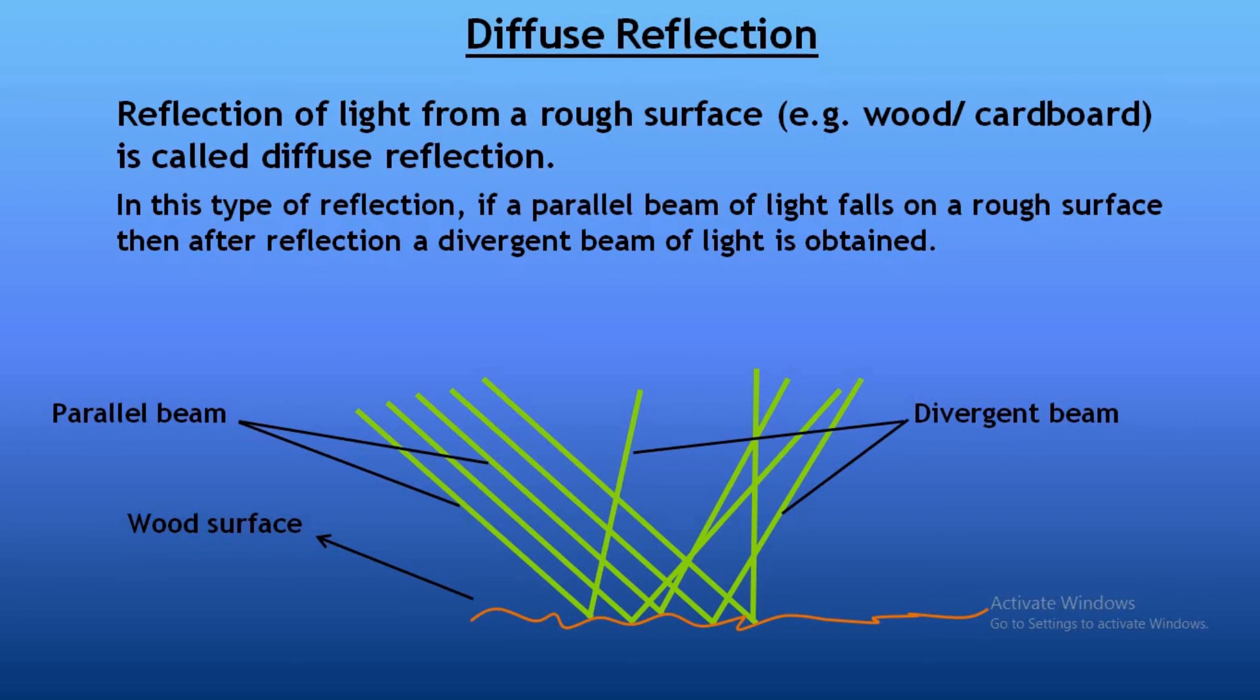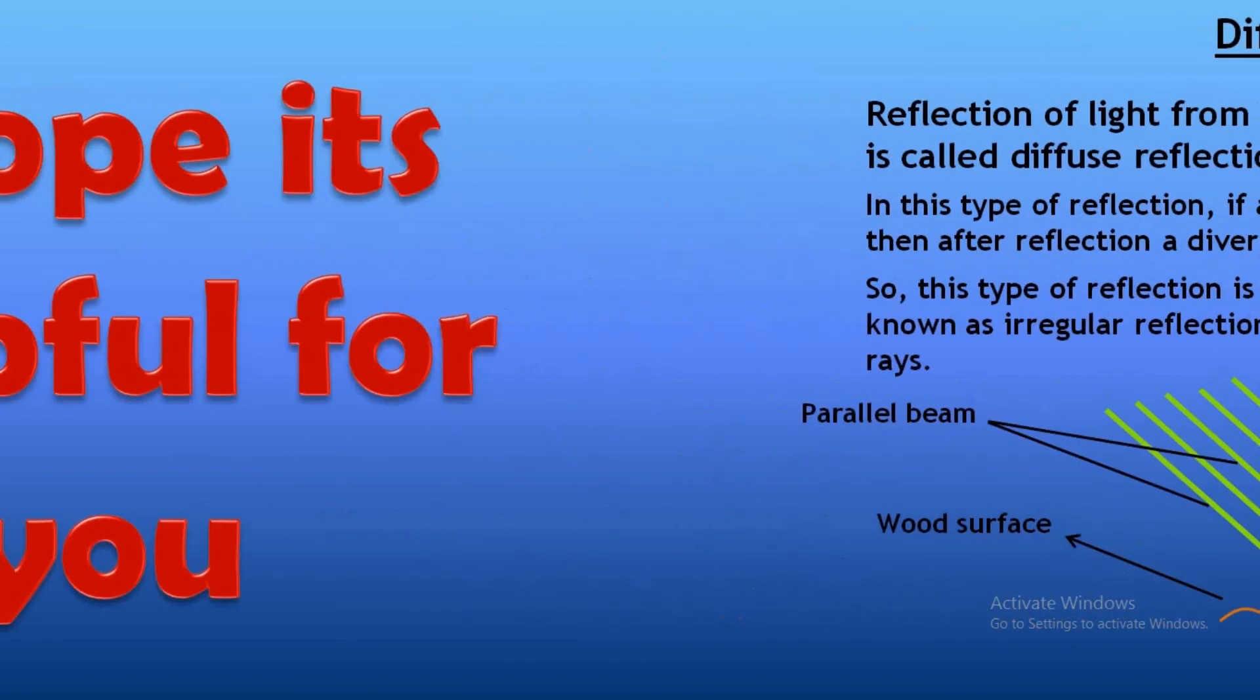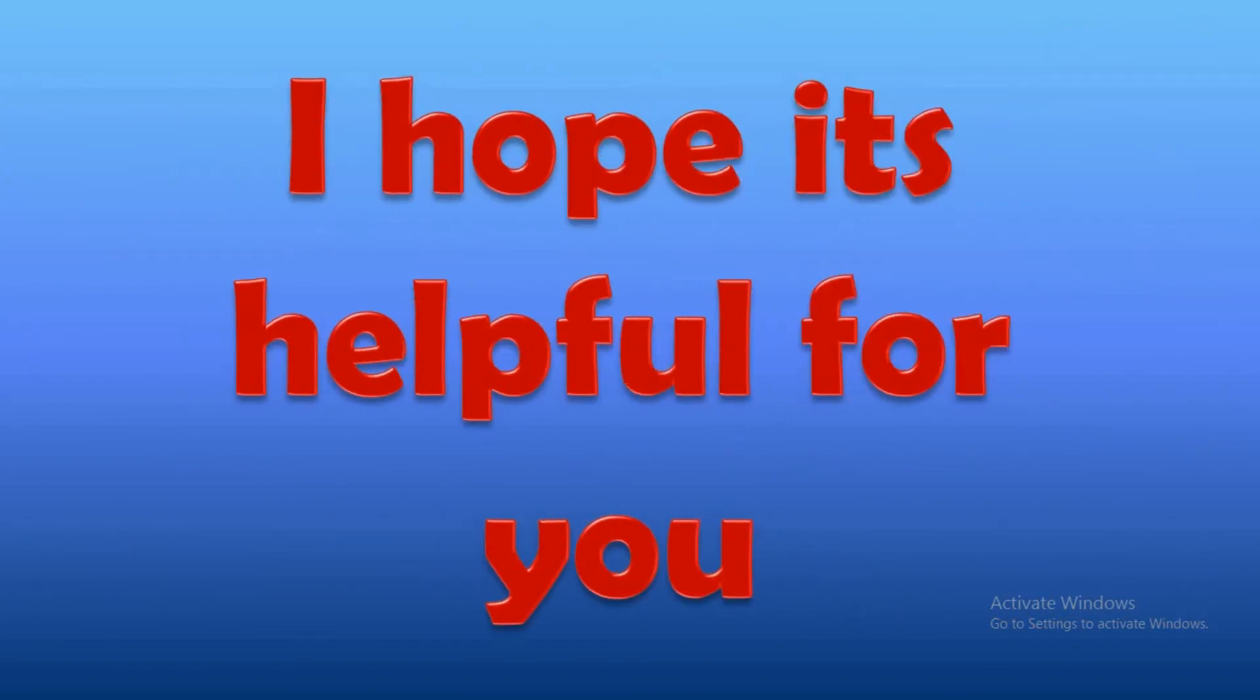So this type of reflection is called diffuse reflection, and sometimes it is also known as irregular reflection due to irregular direction of reflection of light rays. I hope this video helps you.